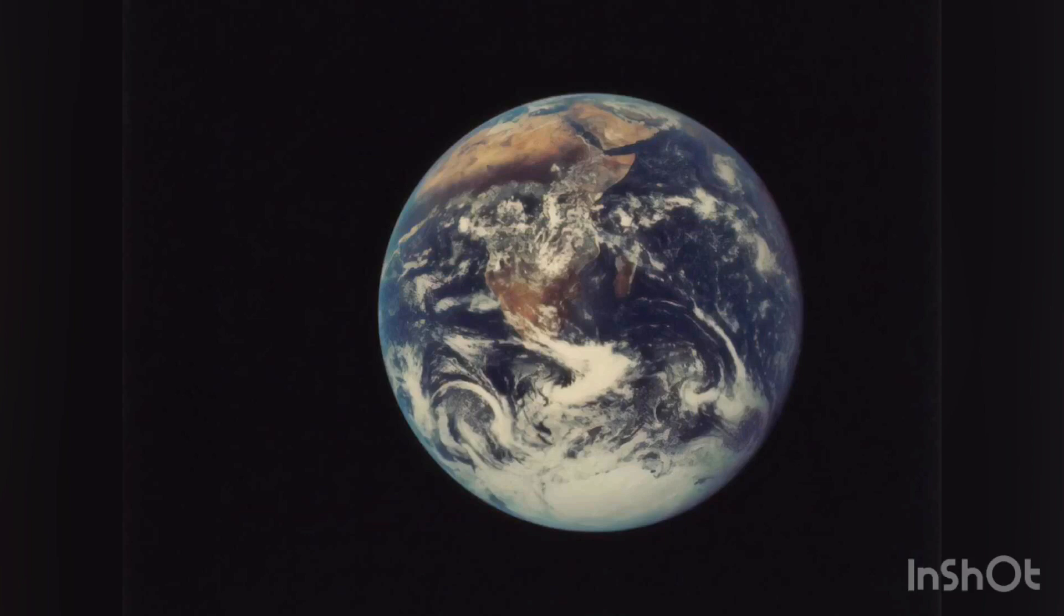Earth is orbited by one permanent natural satellite, the Moon, which orbits Earth at 380,000 kilometers and is roughly a quarter as wide as Earth. The Moon always faces the Earth with the same side through tidal locking and causes tides, stabilizes Earth's axis, and gradually slows its rotation.